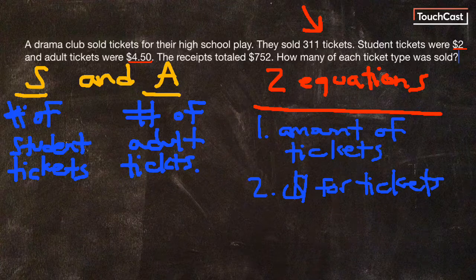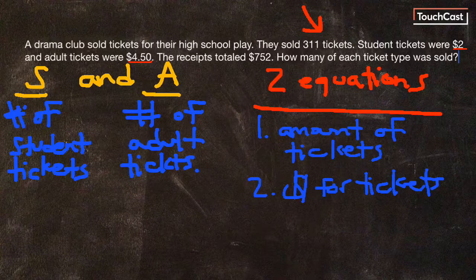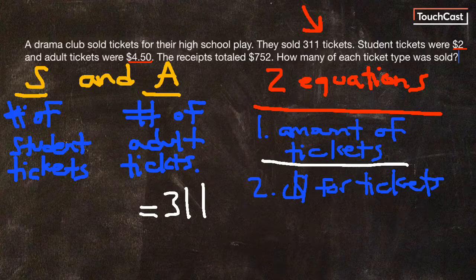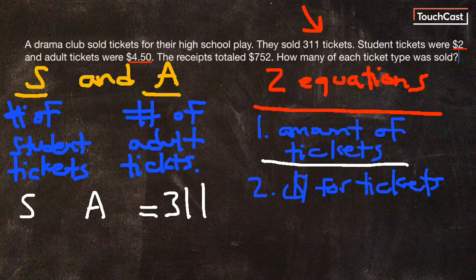The first equation represents the amount of tickets. The total amount of tickets is equal to 311. S is the number of student tickets sold, and A is the number of adult tickets sold. If I add those together, they should equal 311.